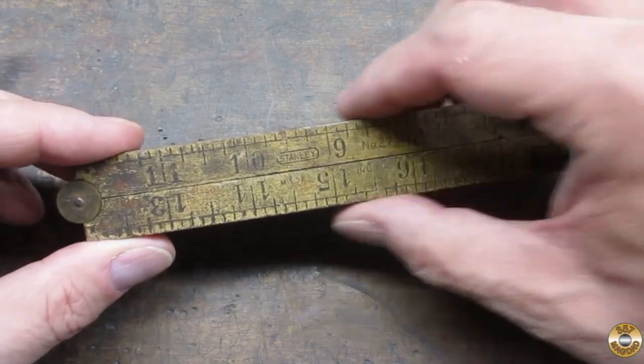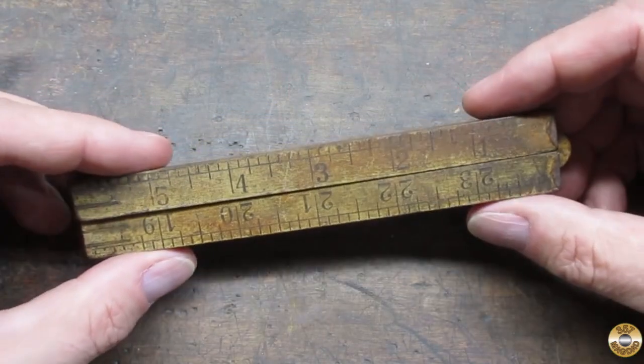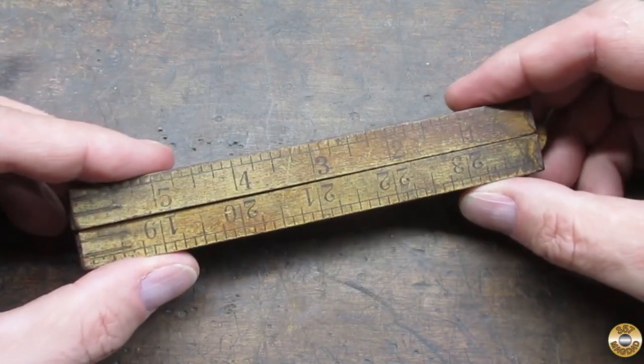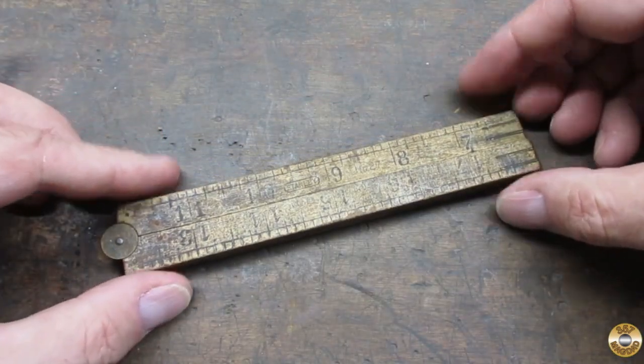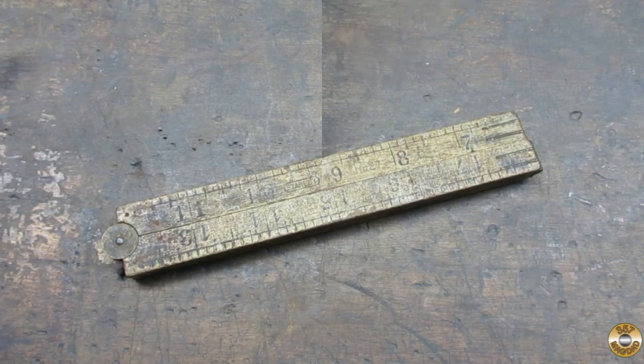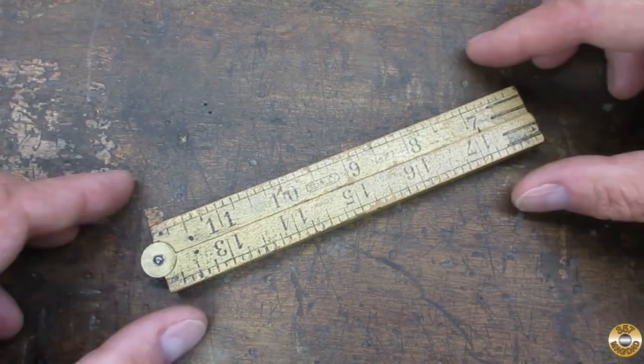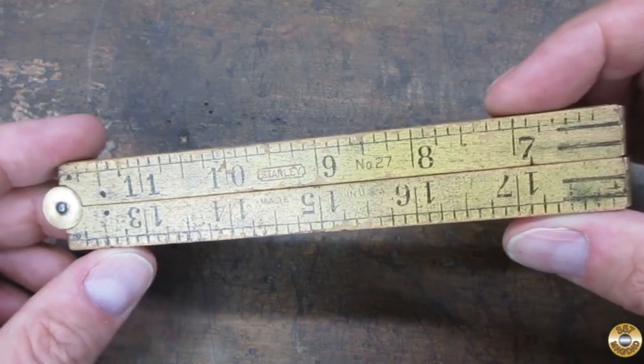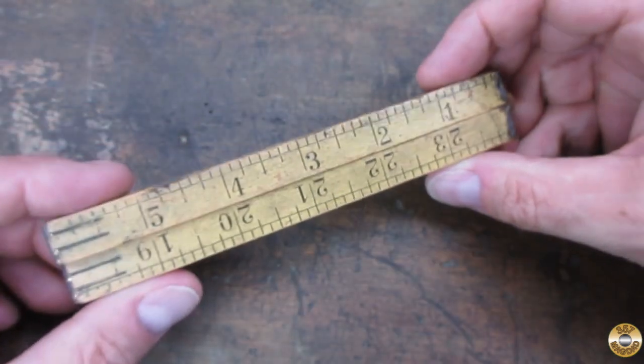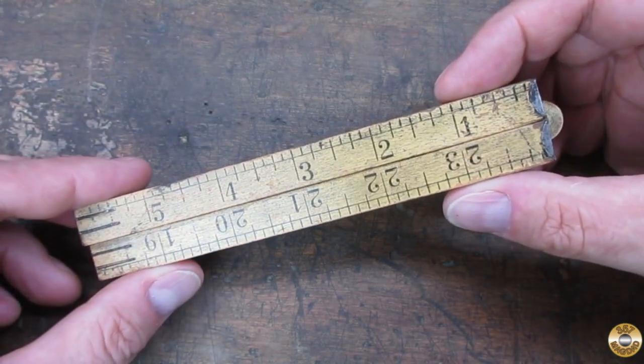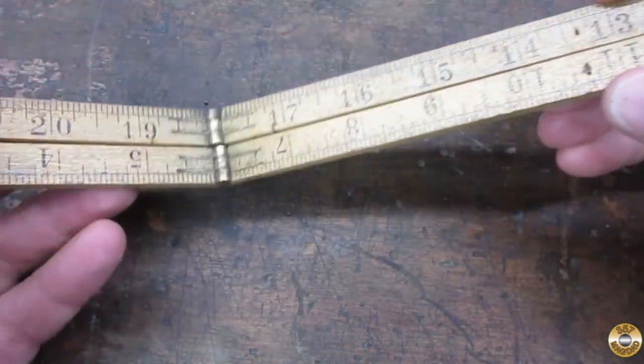Here's what the ruler looked like when I brought it home from the yard sale. And here it is now. I'm pretty happy with how it turned out. It's a lot cleaner, and the markings are still very legible.